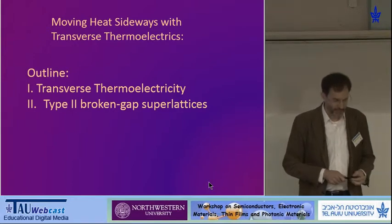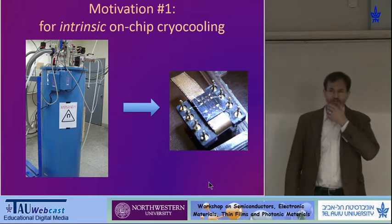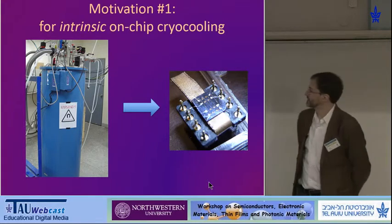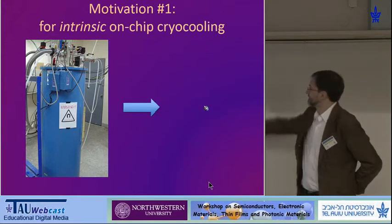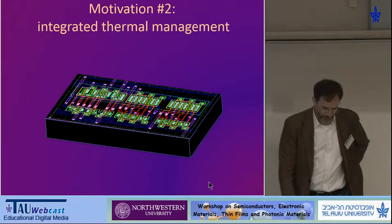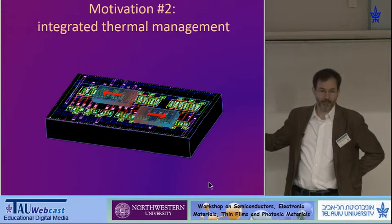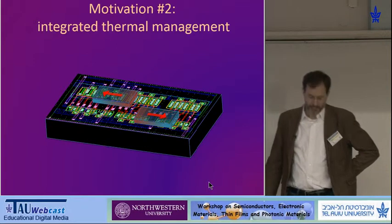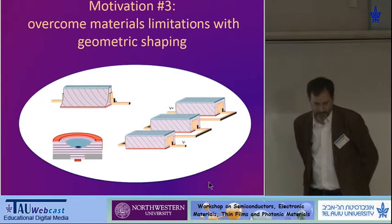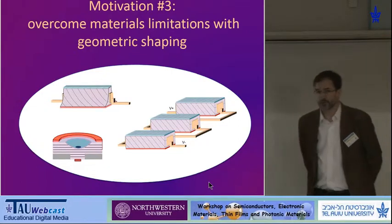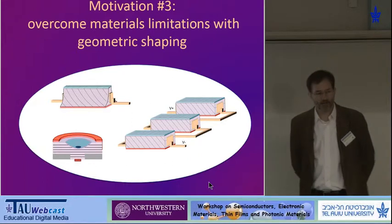This particular talk is about transverse thermoelectrics, or what I'm calling moving heat sideways. What are some of the advantages of a transverse thermoelectric material? I'm going to propose that one thing it might be able to do is replace a cryostat — which occupies basically your entire room — and get cryogenic cooling on chip. Another thing is integrated thermal management: you create your computer chip, lay down a thermoelectric layer, and with little thermoelectric units you can have active cooling to move heat away from a hot spot. Third, with transverse thermoelectrics you can overcome the limitations of the intrinsic parameters of the material just by having enough material and shaping it appropriately.